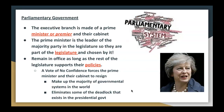Then there's parliamentary government. The executive branch is made up of a prime minister or premier and their cabinet. The prime minister is the leader of the majority party in the legislature, so they are part of the legislature and chosen by it. They remain in office as long as the legislature supports their policies. A vote of no confidence forces the prime minister and their cabinet to resign. Parliamentary governmental systems can eliminate some of the deadlock that exists in presidential government — for example, many would say American government is divided, whereas parliamentary systems are sometimes able to work together to move an agenda forward.